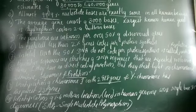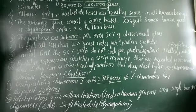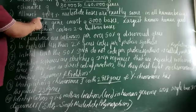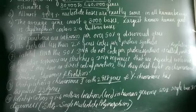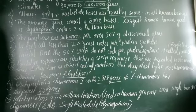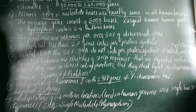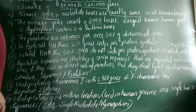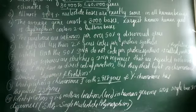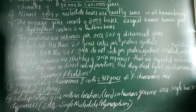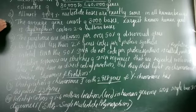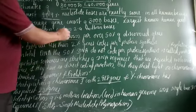This 0.1% difference is used in DNA fingerprinting to identify particular human beings. The average gene consists of 3,000 bases. The known largest gene in human beings is dystrophin, which contains 2.4 million bases.